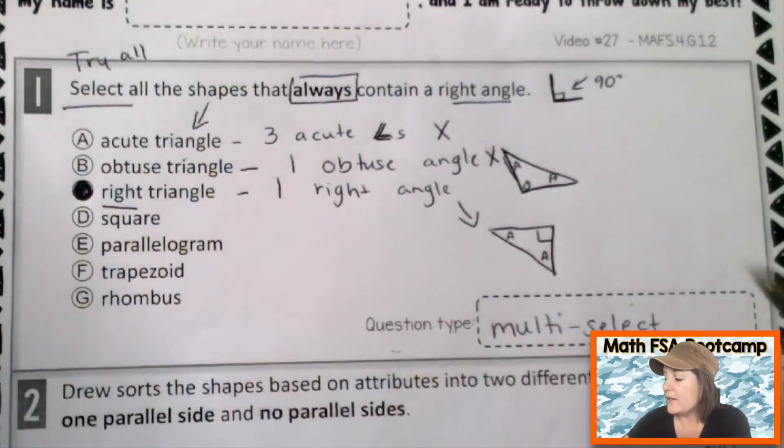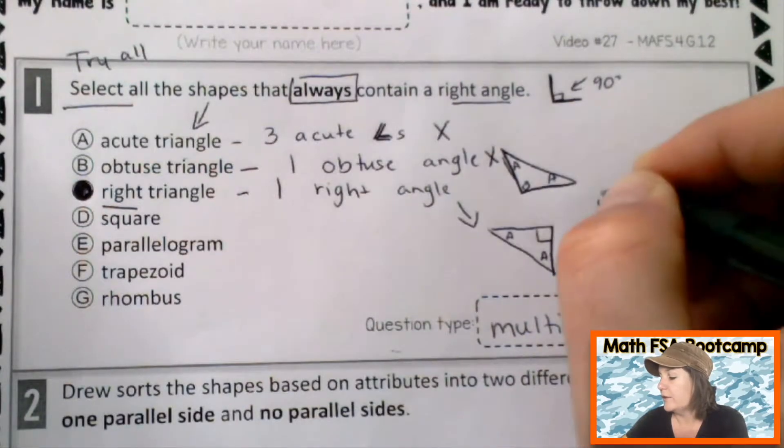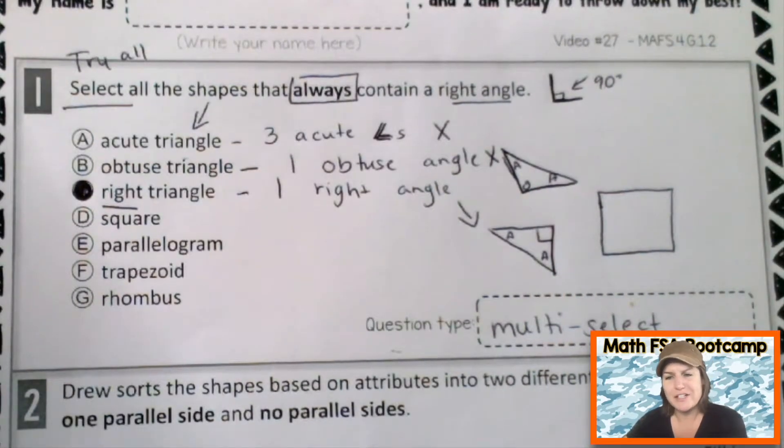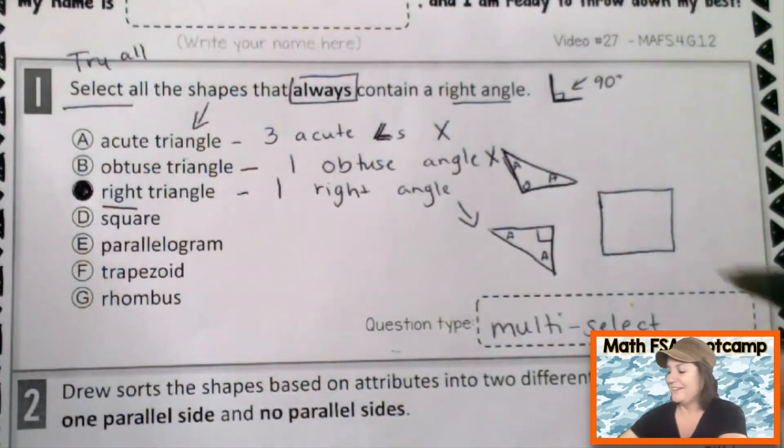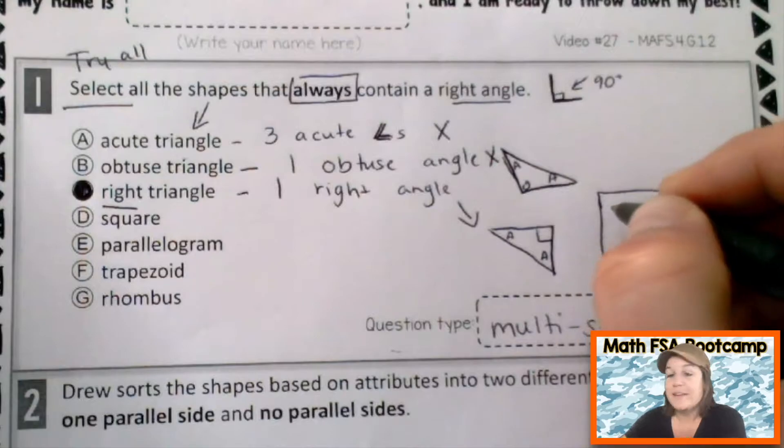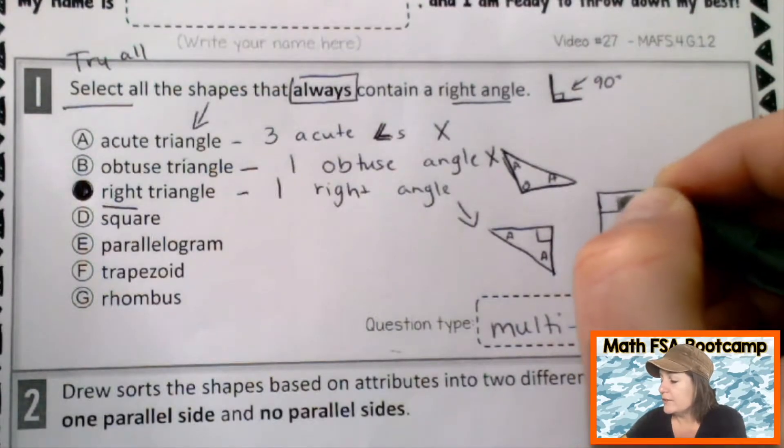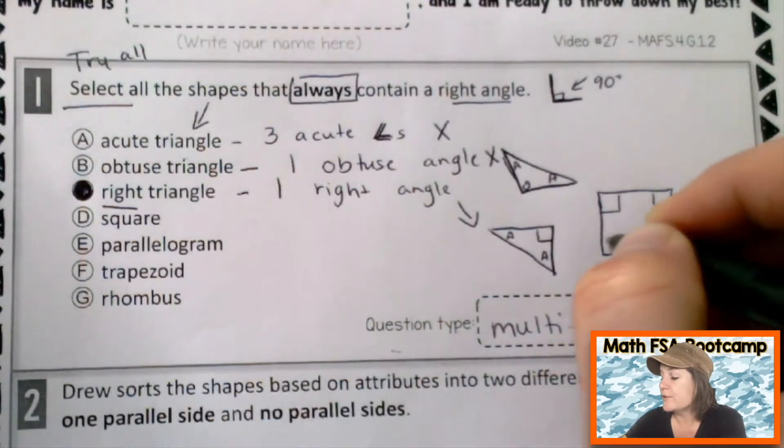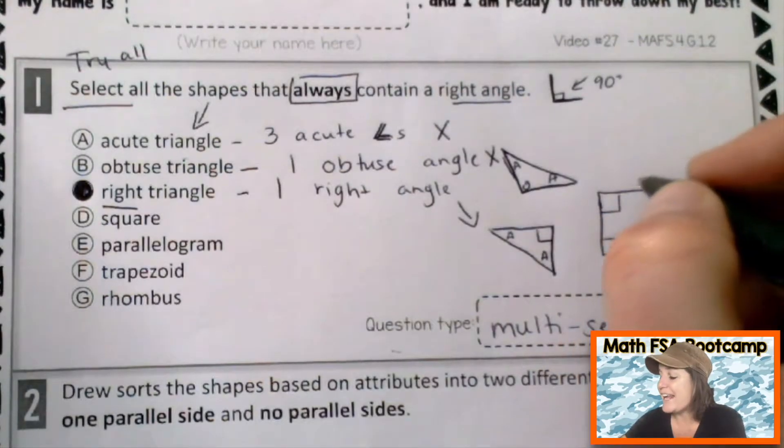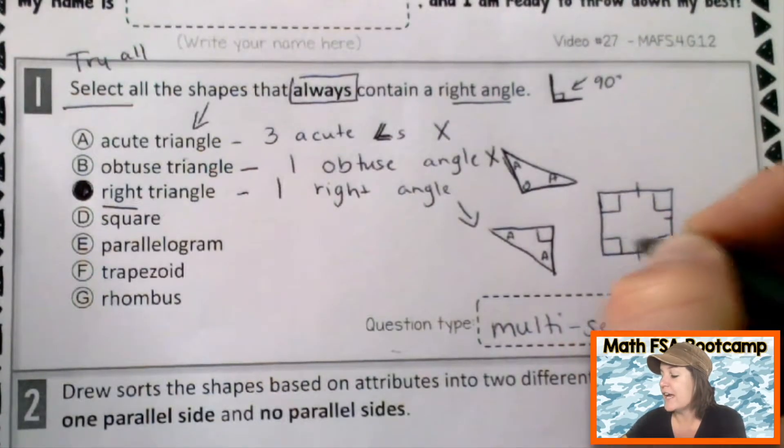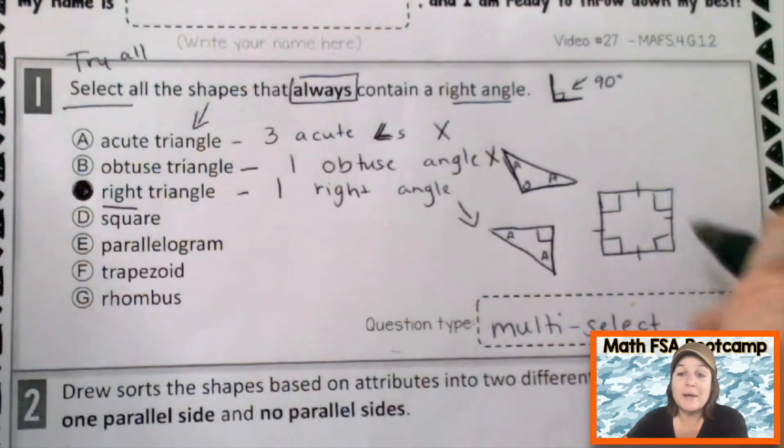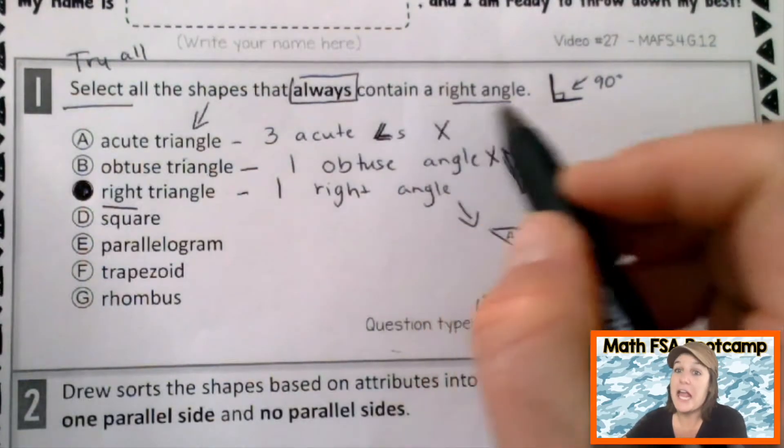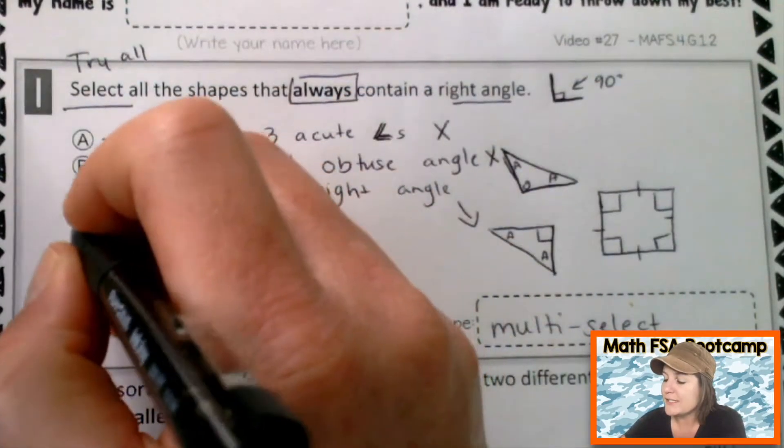A square. Here's a picture of a square. Or at least my best picture. That's actually a pretty good square right there. Alright, self. And a square, the attributes of a square, or the most important attributes, are that it has four right angles and four equal sides. Because a square contains four right angles, it definitely contains a right angle. And we can mark D for square.